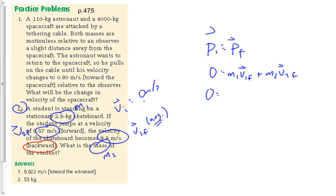M1 is 2.3 kilograms and V1f is negative 8.9 meters per second. I put that red circle and negative note there because I'm about 75% sure I probably would have forgotten that negative — that 'backward' is almost buried in the question. It would be so easy to miss. So draw attention to it. What's the mass of the student? M2 times V2f, where V2f is 0.37 meters per second.